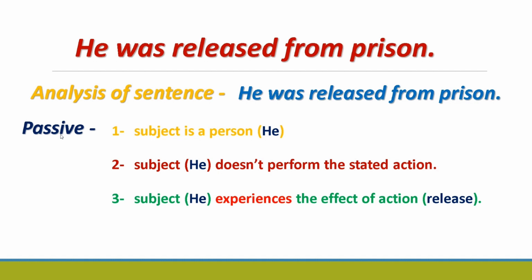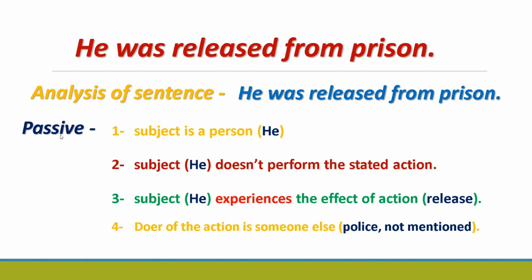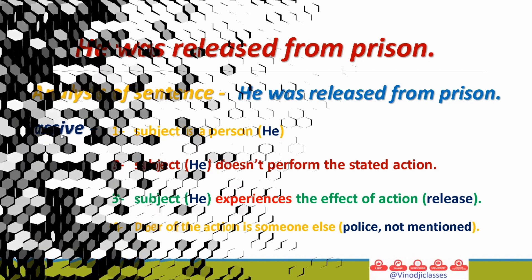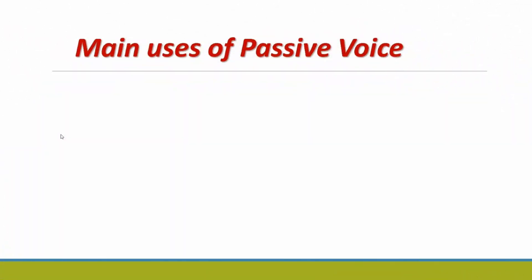This is the main distinction between passive voice and active voice. The last point is that the doer of the action is someone else — someone carried out the release — and that doer is not mentioned in the sentence. Next we will see the uses of passive voice.